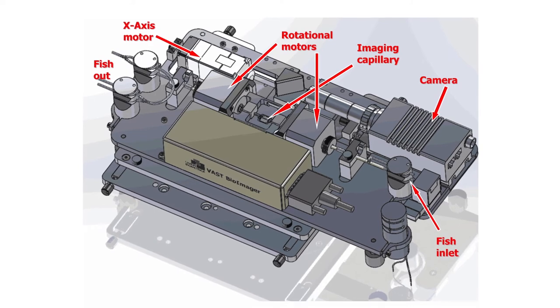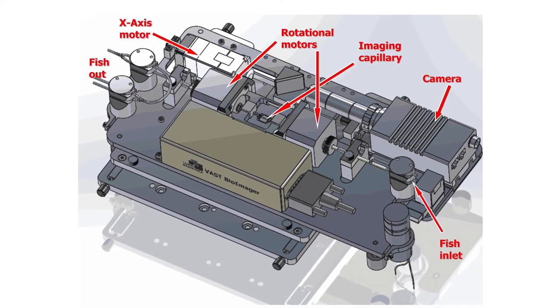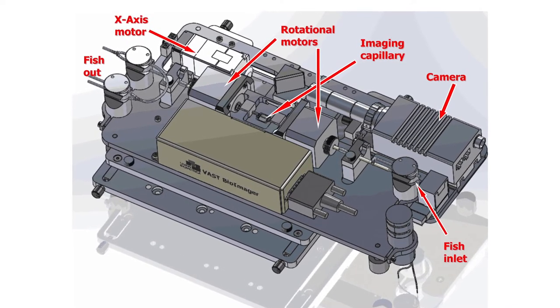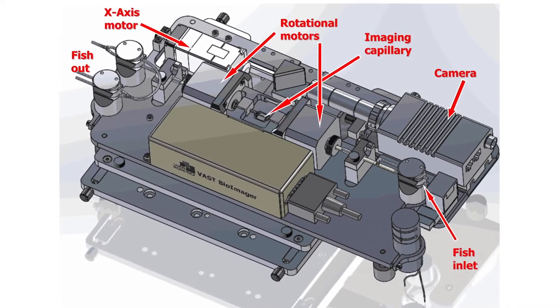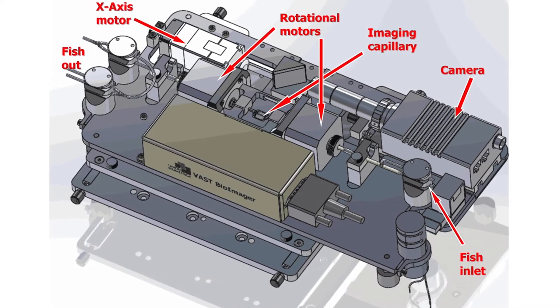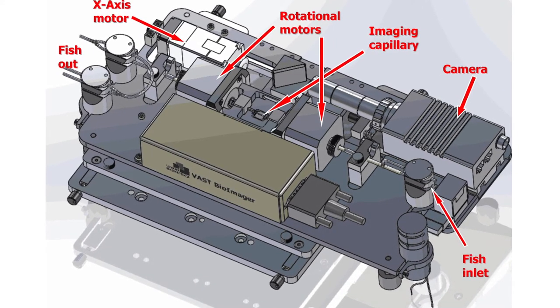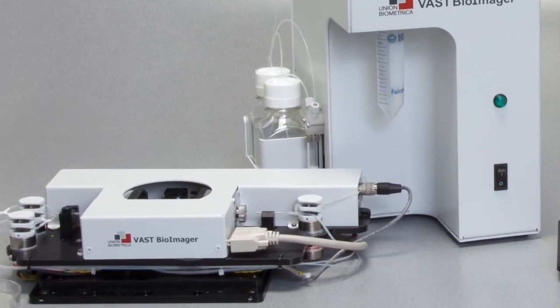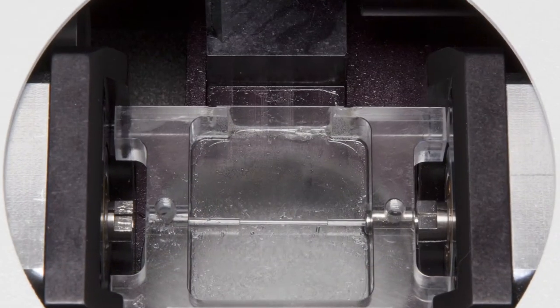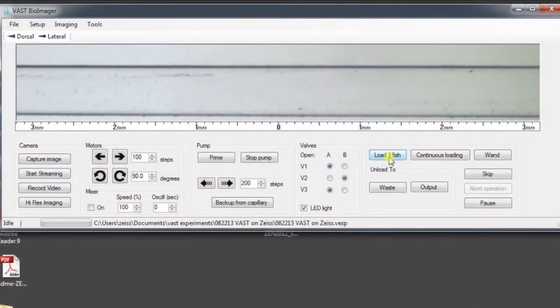VAST BioImager is a modular and expandable platform. The base VAST system is for organ level bright field imaging utilizing a capillary which can be rotated in the field of view of an onboard camera. The system loads and positions each larva laterally in the field of view of an onboard 10 micron resolution camera for a bright field image.